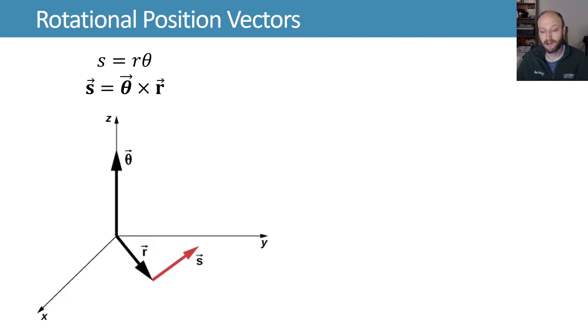As before, when we were dealing with translational motion, we defined things in terms of vectors, and that's going to be useful here again for rotational motion. We have the scalar statement s equals r theta. The vector equivalent of that is my vector s equals theta cross r.